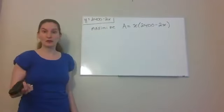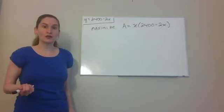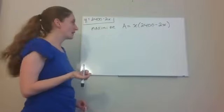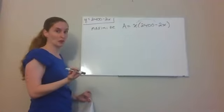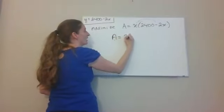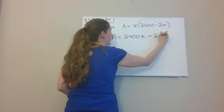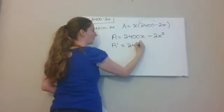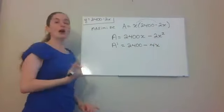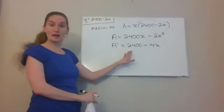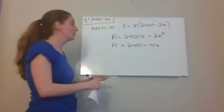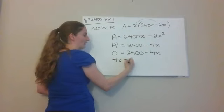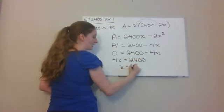To find the absolute maximum, I need to find critical values by finding where the derivative equals zero or is undefined. It's easier to distribute x first: area equals 2,400x minus 2x². Taking the derivative: A prime equals 2,400 minus 4x. This polynomial is defined everywhere, so I just need to find where it equals zero. Setting it to zero and solving: 4x equals 2,400, so x equals 600.